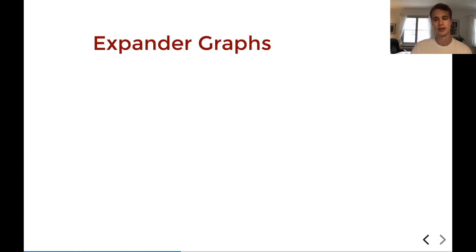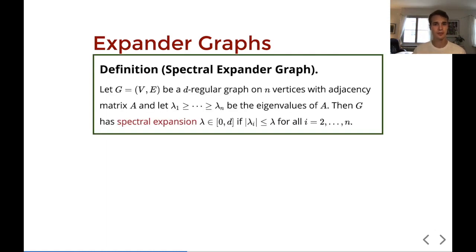That was it for non-malleable codes for now. Let's talk a bit about expander graphs. Expander graphs are pretty well known in computer science, but we'll go through some stuff anyway. If we have a d-regular graph G on n vertices and we look at the eigenvalues of the adjacency matrix of G, then we say that G has spectral expansion lambda if all but the top eigenvalue of the adjacency matrix has absolute value at most lambda. Typically we have lambda, or in computer science applications, we can use that lambda is about square root d. And for our applications, we need at most that it's little o of d to the two thirds. So we're good there.